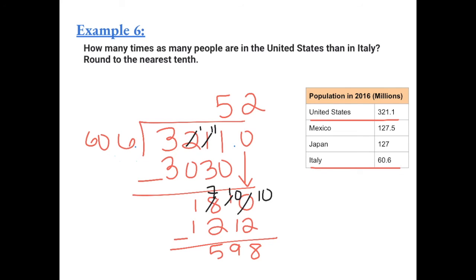Now if we bring up the decimal, the 2 is in the tenth place, and this says round to the nearest tenth. We have to find the next number after that to see what we need to round the 2 to. We have to add one more 0 and see how many times 606 goes into 5,980. It goes in 9 times, so we can stop there because we're rounding to the nearest tenth.